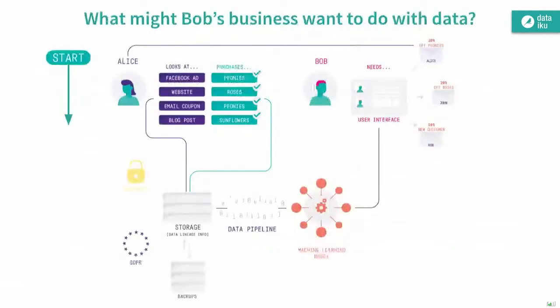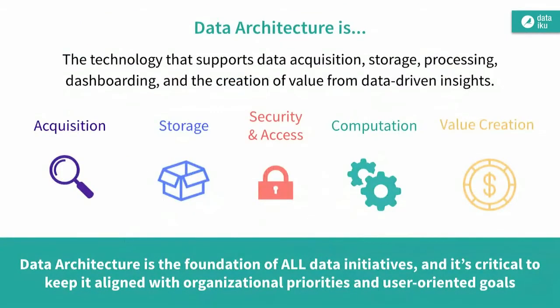Here's a map of what one simple company might do with data. We're going to look at Bob's flower shop, where we have a customer browsing around on the website, generating data about pages she's visiting and purchases she's making. What are we going to do with that data? First, we've got to find somewhere to store it securely — maybe we have to comply with GDPR in this case. Then we've got to get that data from storage into a compute where we're going to run a machine learning model. From there, we take the results of that model back to Bob, who uses it to make decisions about marketing that drive value for his organization.